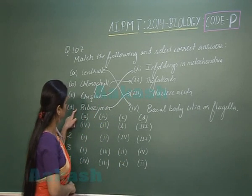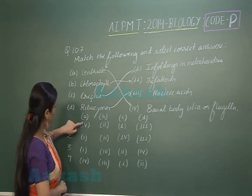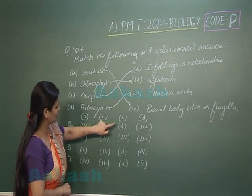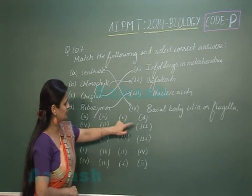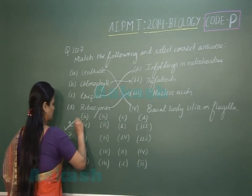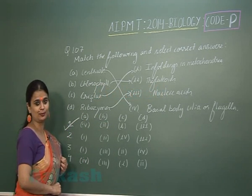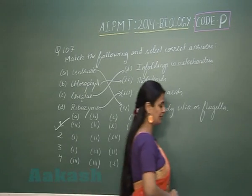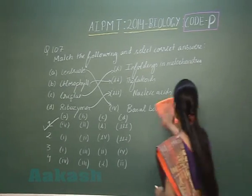So what is the right option? For A, it is 4. For B, it is 2. For C, it is 1. For D, it is 3. So the right option for question number 107 is option 1. So now coming to the next question, 108.